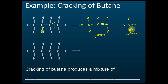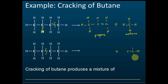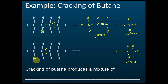Sometimes a different bond is broken instead. If a different carbon-carbon bond breaks, that part of the molecule forms a free radical, and the same process happens — the free radical attacks and pulls away hydrogens, and the remaining fragment forms a double bond to become another alkene.